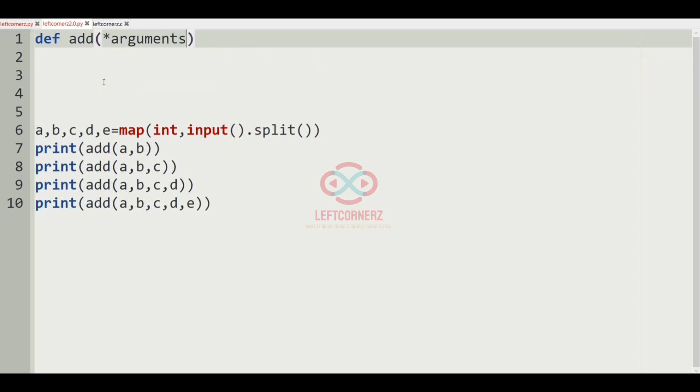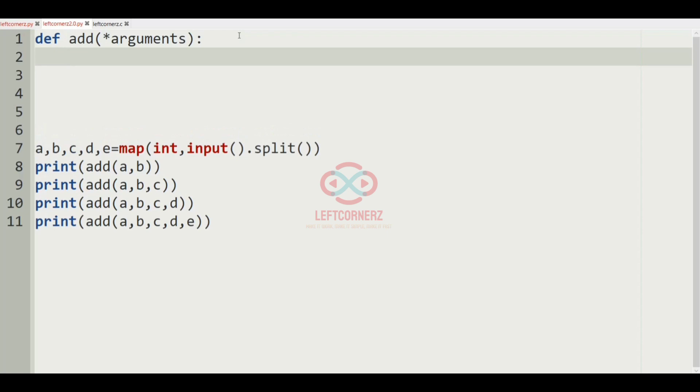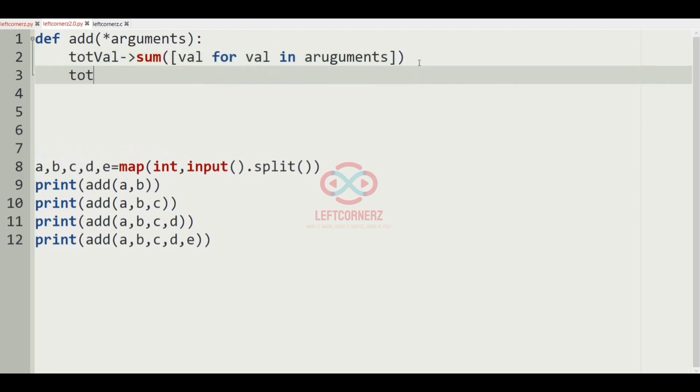So here inside we have asterisk arguments. So here we will unpack, and then inside this function we'll have a variable called total value, which is equal to the sum of val for val in arguments. So this statement will find the sum of every value whenever the function is called and use the output accordingly. And finally, we'll return the total value.